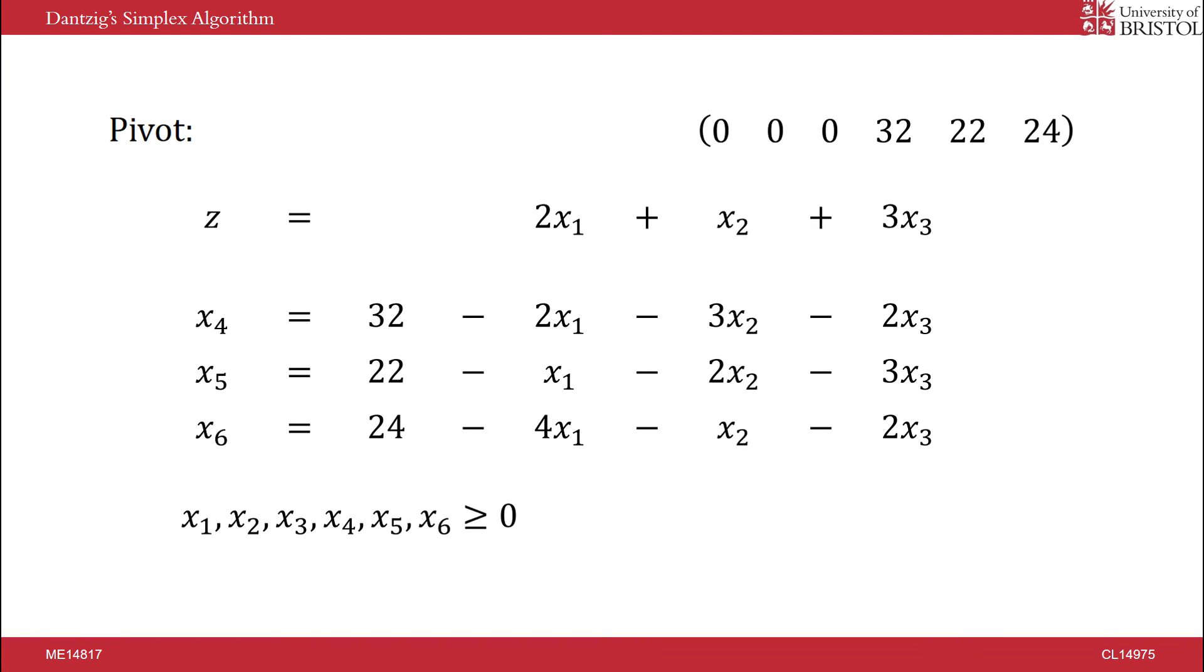We pick a variable to increase, which will also increase the value of the objective function. For this to happen, there must be a positive coefficient. Let's pick x1. We want to increase x1 as much as possible without violating any of the non-negativity constraints. So we find the value we will set each basic variable in turn to 0, and then choose the tightest constraint.